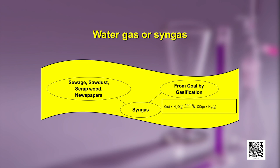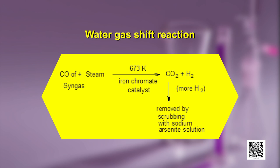Carbon monoxide present in syngas can be subjected to the water gas shift reaction to obtain more hydrogen. More H2 can be obtained from CO by treating it with steam and an iron chromate catalyst, giving CO2 and hydrogen gas. So from CO we are producing more H2 — steam provides water, and oxygen is abstracted by CO leaving behind hydrogen gas. The CO2 produced in this reaction is then removed by scrubbing with sodium arsenide solution.